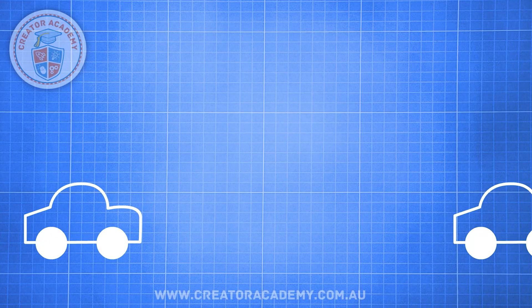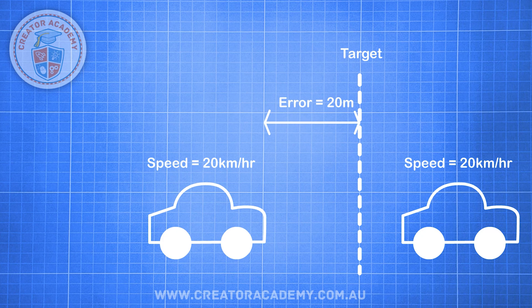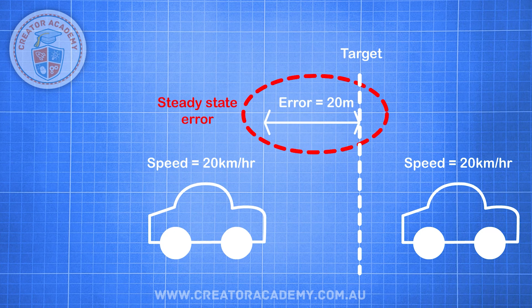However, a proportional controller doesn't always work. Imagine if the stop sign was replaced by another car travelling in the same direction at 20 km/h, and our program aims to follow that car by staying a safe following distance. When our car is 50 metres away, we accelerate to 50 km/h — so far so good. But once we approach 20 metres from the target distance, we are travelling at 20 km/h, which is only just enough to stay with the car in front, leaving a constant error of 20 metres. This is called a steady state error.